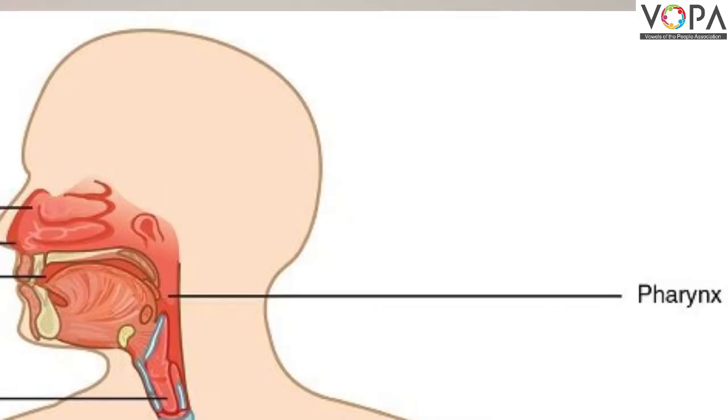The second point is the pharynx. Both the food pipe and wind pipe originate in the pharynx. The wind pipe is present in front of the food pipe. There is a lid at the beginning of the wind pipe. This lid closes the wind pipe during the passing of food into the food pipe, thereby preventing the entry of food particles into the wind pipe. Otherwise, the wind pipe remains open, and air passes through the pharynx into the wind pipe.